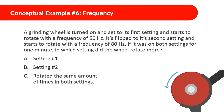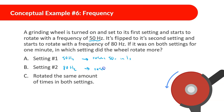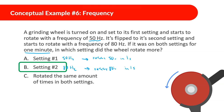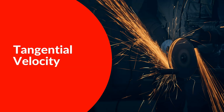A grinding wheel is set to a first setting with a frequency of 50 hertz, then switched to a second setting with a frequency of 80 hertz. If it runs on both settings for one minute each, in which setting did it rotate more? Setting one rotates 50 times per second; setting two rotates 80 times per second. Setting two results in more rotations. That's everything for period and frequency — next time we'll talk about tangential velocity.